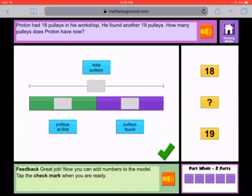Now I need to put the numbers, the things that we know and the things that we don't know, into this bar model. Reading it again, it says Proton had 18 pulleys in his workshop. He found another 19 pulleys. So how many pulleys does Proton have now?